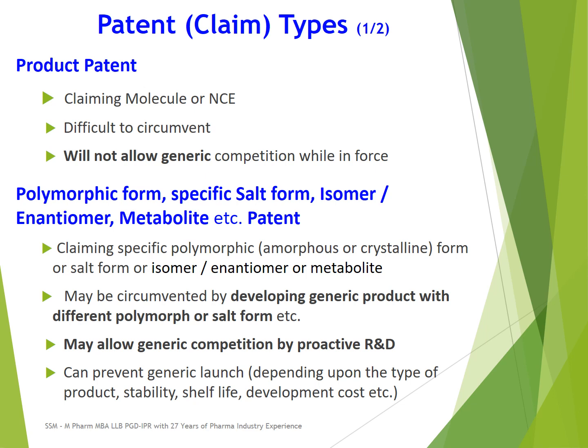These types of product claims may be circumvented or bypassed by proactive R&D. If a generic company does proactive R&D, they may be able to develop alternative forms — for example, a different polymorphic, crystalline, or amorphous form. If the patented form is a potassium salt, they may develop a sodium salt form instead.